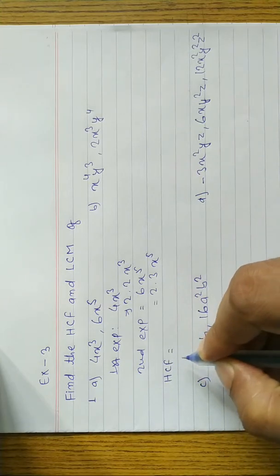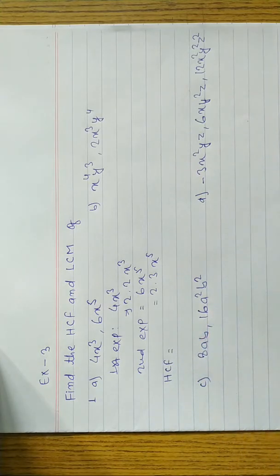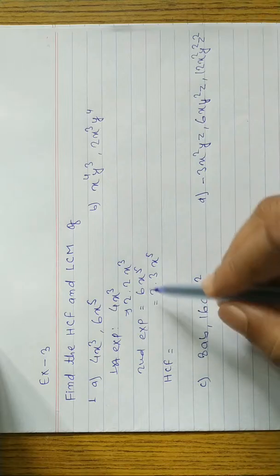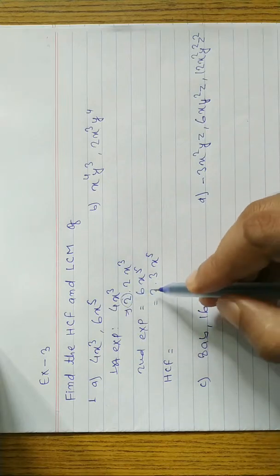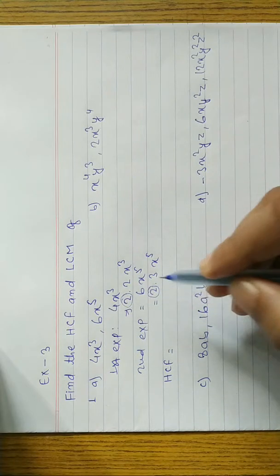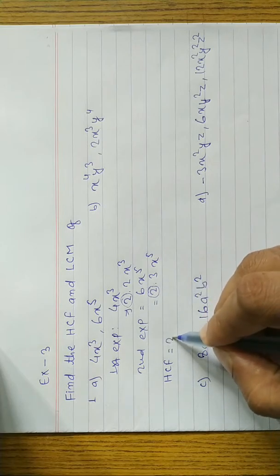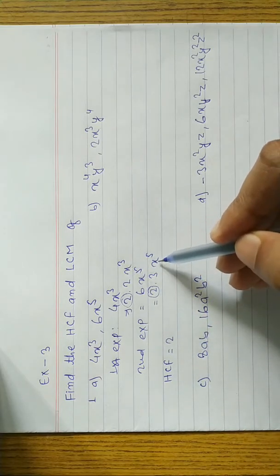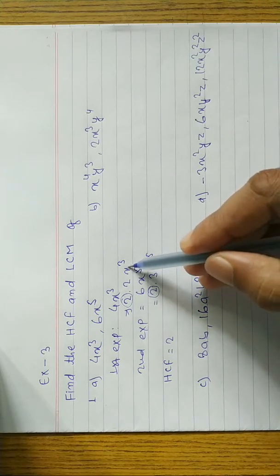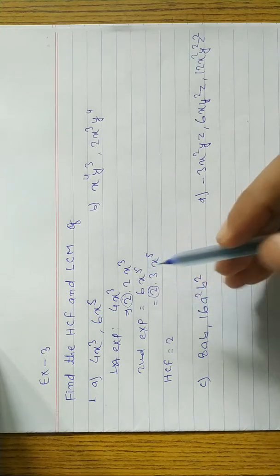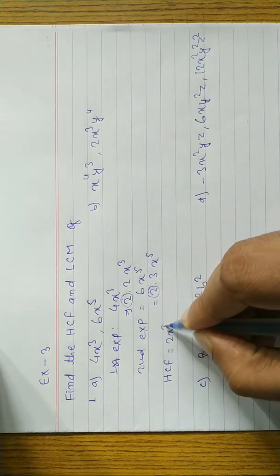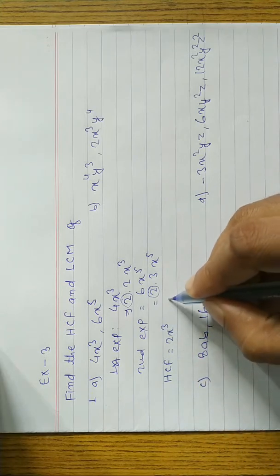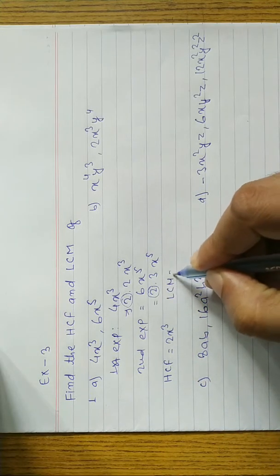Now we have to find both SCF and LCM. SCF means common factors. You can see here there is a 2 and here is a 2, so we can take 2 as common. For the variable, here is x³ and here is x⁵, so which one is the smallest? x³ is smallest, so we write x³. This gives us the SCF.